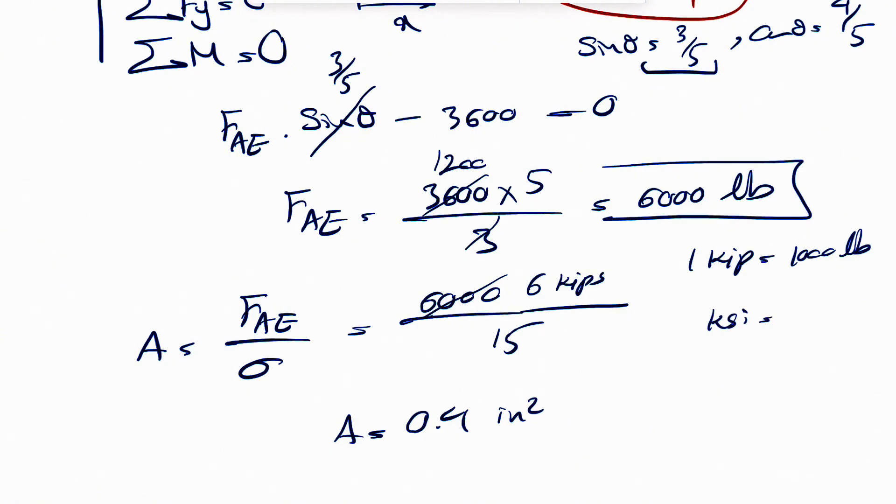And we know KSI is one kip over inches squared. So yeah, the area will be in inches squared units. And the final answer for this question, hope everything was clear. Let me know if you guys have any questions, you guys take care. I'll see you in the next video. Have a good one.